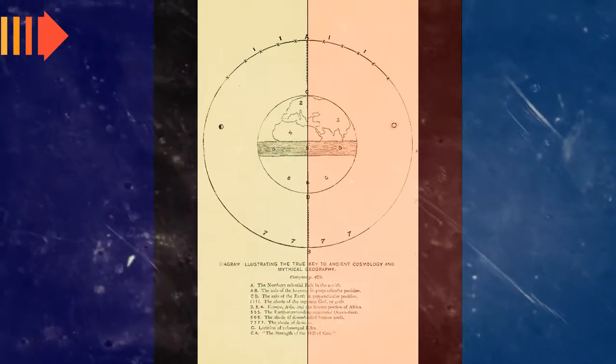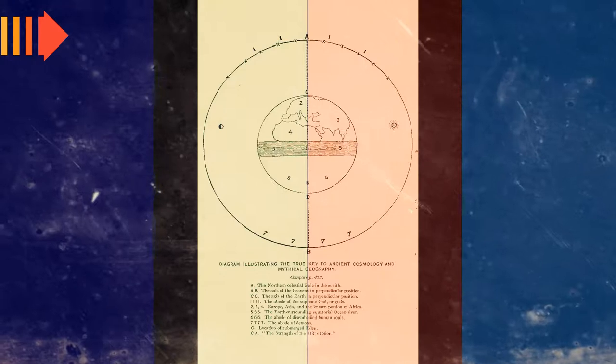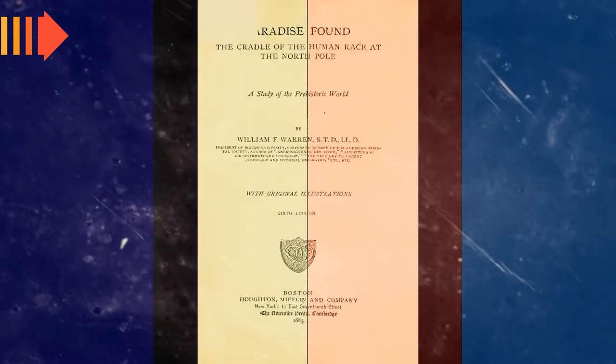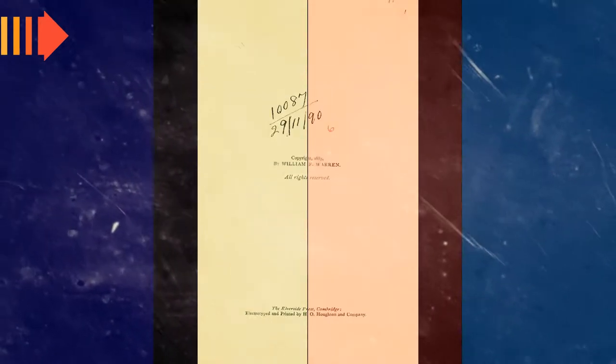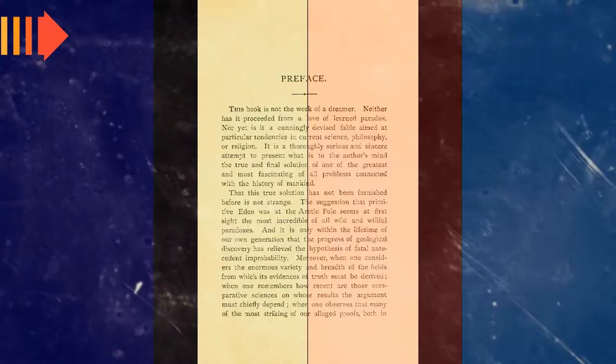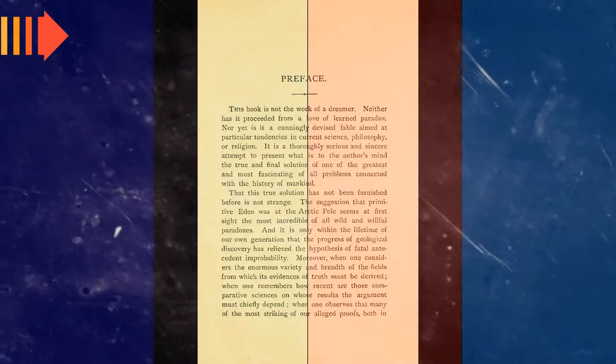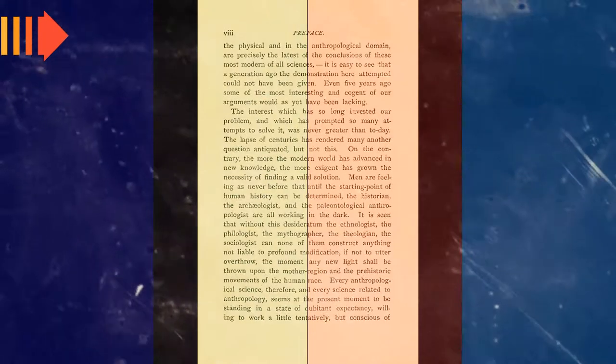He entered the New England Conference in 1855 and was professor of systematic theology in the Methodist Episcopal Missionary Institute at Bremen, Germany, 1860-1866. He was acting president of the Boston University School of Theology, 1866-1873, president of Boston University, 1873-1903, and dean of the Boston University School of Theology, 1903-1911. After 1873, he was also professor of comparative theology and philosophy of religion.